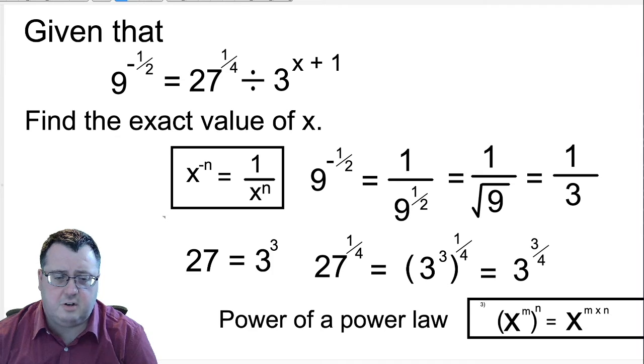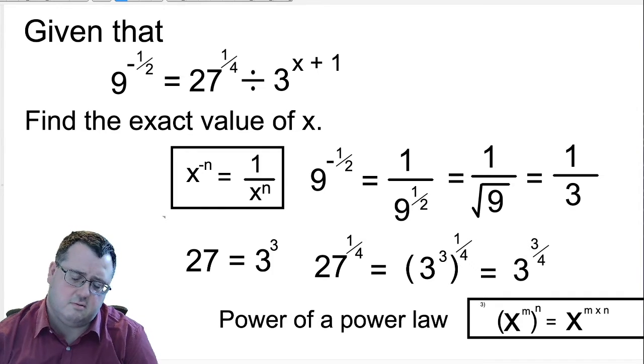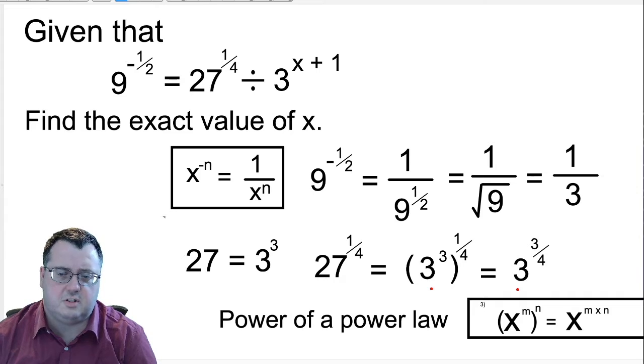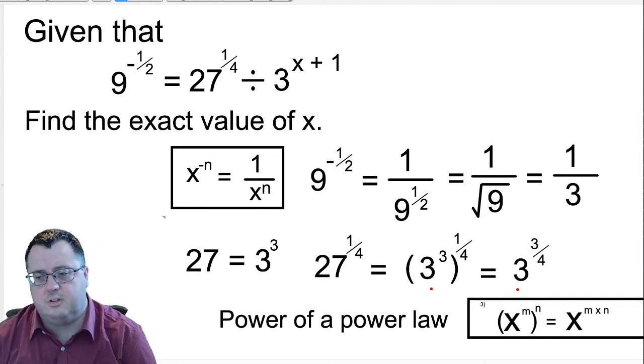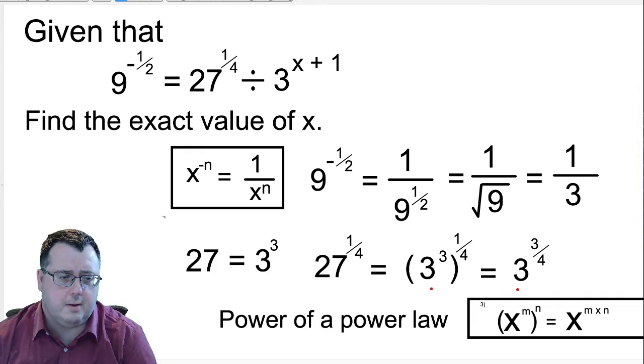Then we'll look at the 27. We should know that 27 is 3 cubed. So 27 to the 1 quarter is 3 cubed to the power 1 quarter, which is 3 to the power 3 quarters. Okay, so you should be able to reduce the 9 and the 27 to a third and 3 to the 3 quarters. The next thing we're going to do is we're going to use the power of a power law. Yes, the power of a power law is used in here to get to here. You're multiplying the 3 by 1 quarter to get 3 quarters. Okay, let's move on.